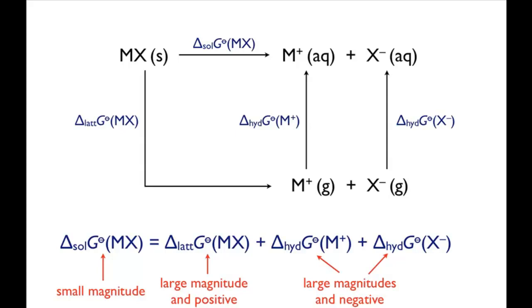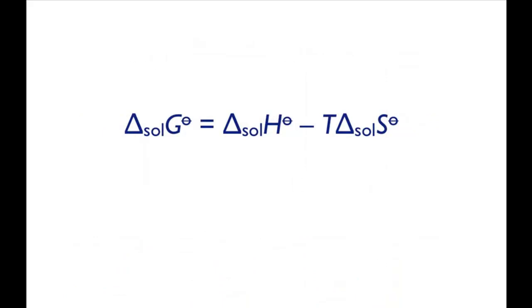Why is this a Gibbs energy cycle rather than the more familiar enthalpy cycle? Gibbs energy changes are related to both enthalpy and entropy changes. When Gibbs energy changes are large, you can safely ignore entropy changes and understand the process simply from the enthalpy changes — this is an approximation, but it's usually a good one. In the case of solvation, the approximation is not very accurate, because the Gibbs energy of solvation is relatively small, so both enthalpy and entropy changes need to be considered.